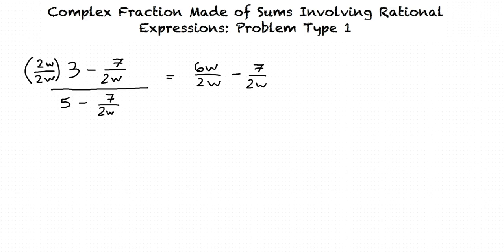But let's do this in a less complicated way. How about we multiply the entire numerator by 2w, and the entire denominator by 2w? Essentially, this is multiplying the whole problem by 2w over 2w, which equals 1. So it doesn't actually change the value of the original fraction.